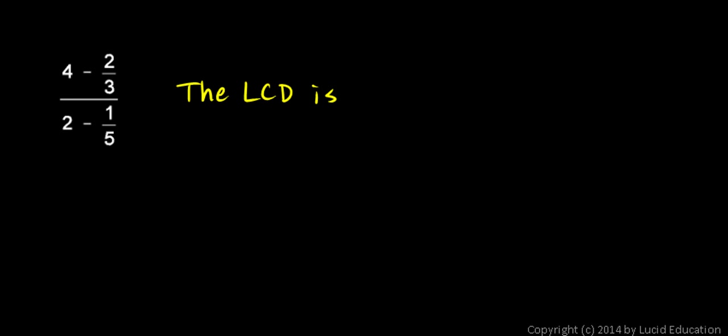So I'm going to multiply the top and the bottom by 15 like this. I've multiplied my entire numerator by 15 and my entire denominator by 15. Now when I distribute this 15 here, this is going to be 15 multiplied by the 4 and by the 2 thirds. And when I distribute this 15 here, 15 times 2 and 15 times the 1 fifth, the little fractions will go away.